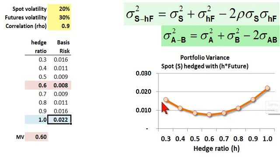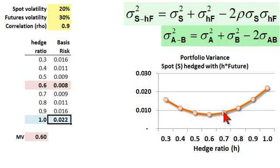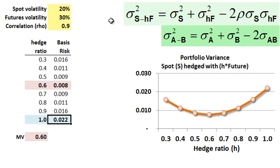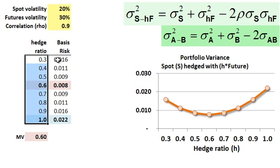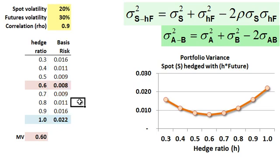Visually, we can see that a hedge ratio of one is not at all optimal for portfolio variance. We can ask: what is the hedge ratio that gives us the lowest portfolio variance — the local minimum on this plot? That is what we call the minimum variance hedge.